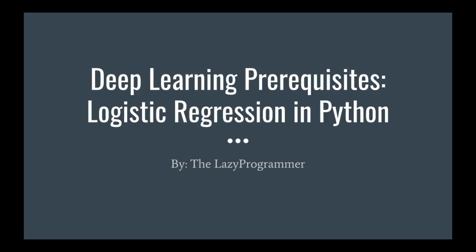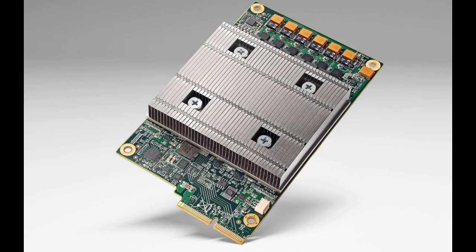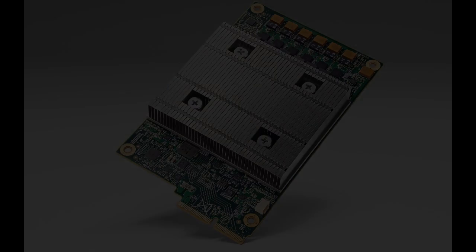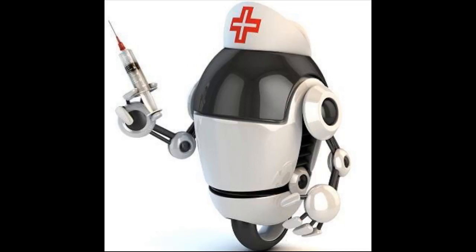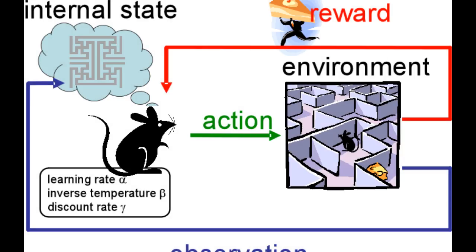Hey everyone, and welcome to Deep Learning Prerequisites: Logistic Regression in Python. In recent years we've seen a resurgence in AI, or artificial intelligence, and machine learning. Machine learning has led to some amazing results, like being able to analyze medical images and predict diseases on par with human experts. Google's AlphaGo program was able to beat a world champion in the strategy game Go using deep reinforcement learning.